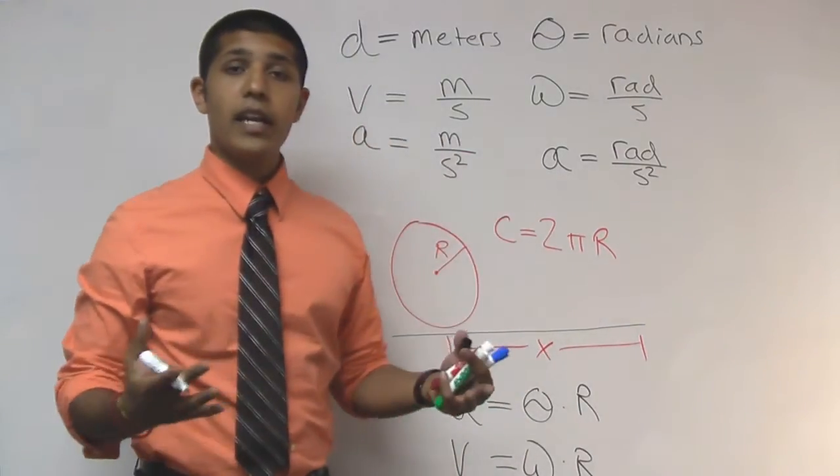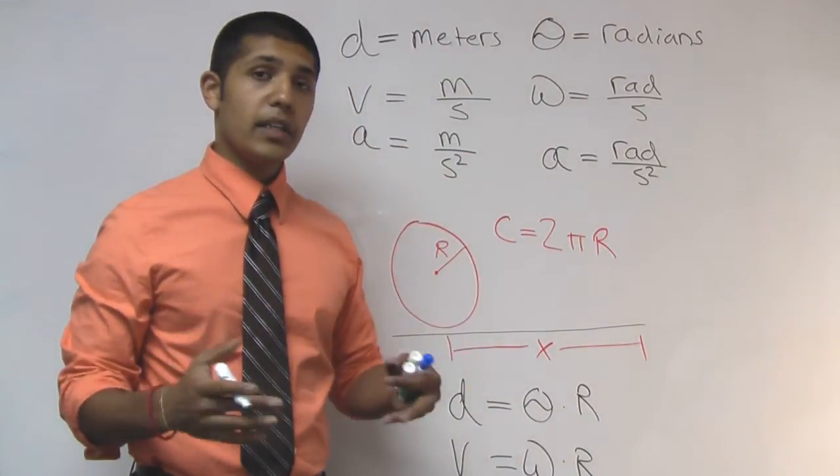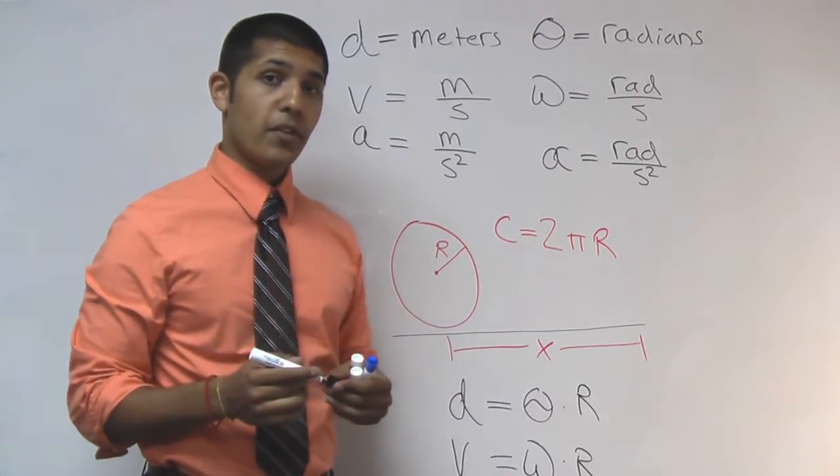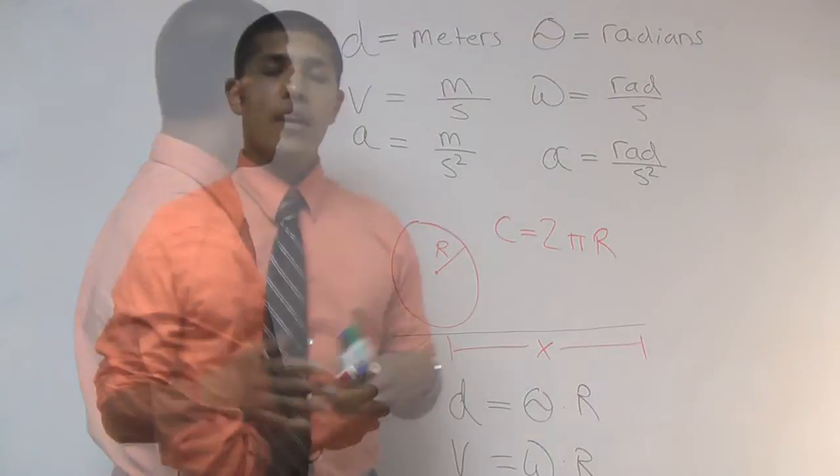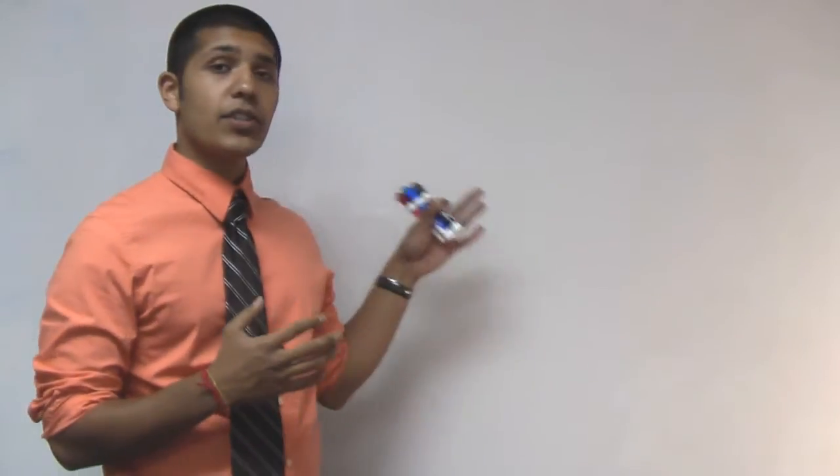Again, the radius is what's going to link up our linear and rotational world. So make sure you know that before you start on your question. Alright, so now that we've seen the relationship between the variables, let's take a look at how we put the variables into equations.